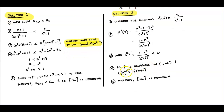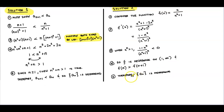In step four, since the function is decreasing on the interval from 1 to infinity, and we know that f(n) > f(n+1), we can conclude that the sequence a_n is decreasing.